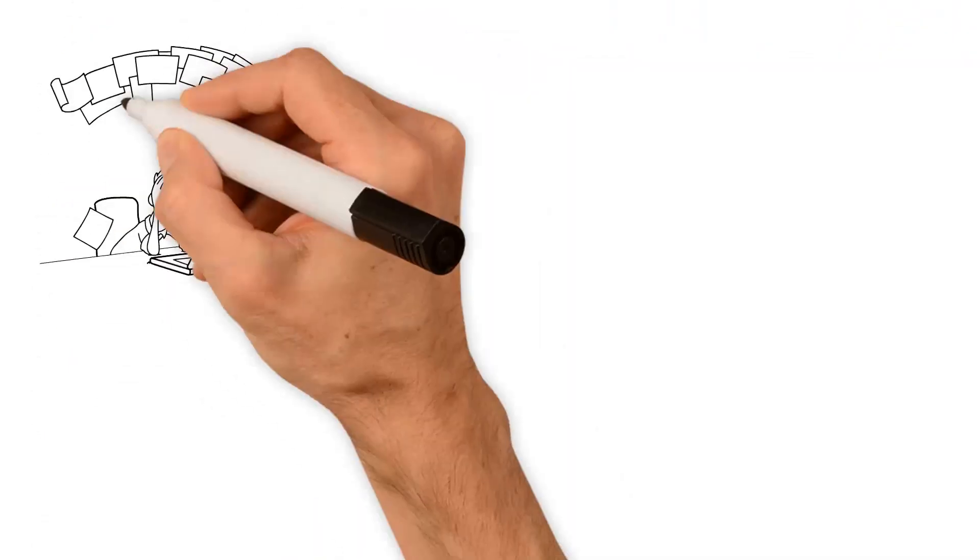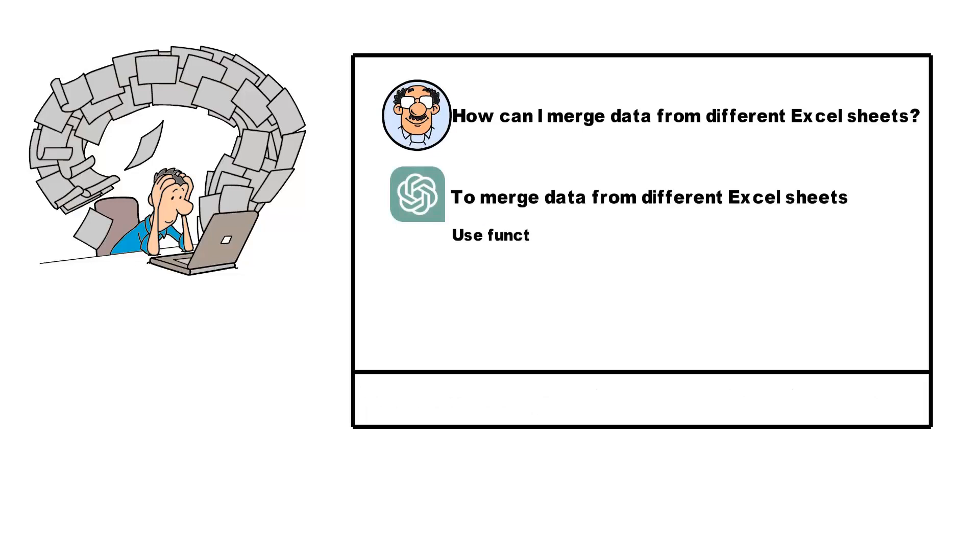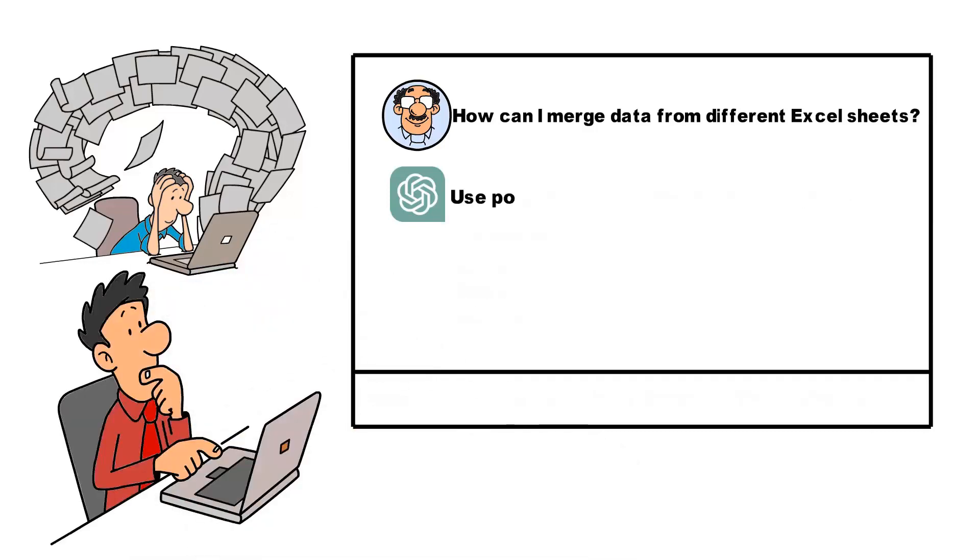When facing more complicated issues, you might ask, how can I merge data from different Excel sheets? ChatGPT could suggest using the V-Lookup function or the Index and Match functions to consolidate data. Alternatively, it might introduce you to Excel's Power Query tool, which can be used to merge and clean up data from various sources.